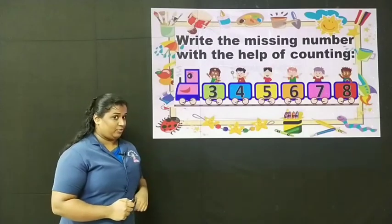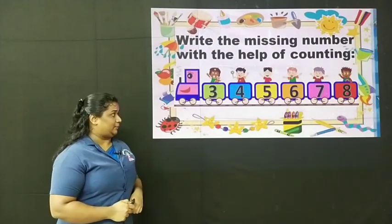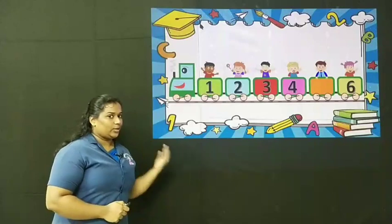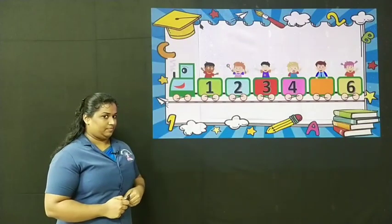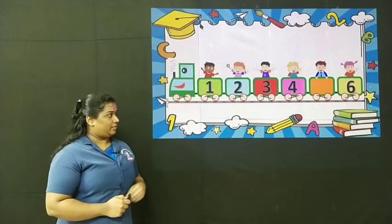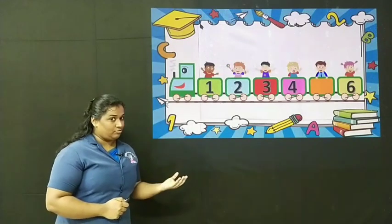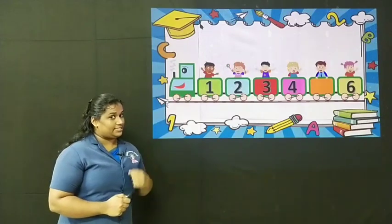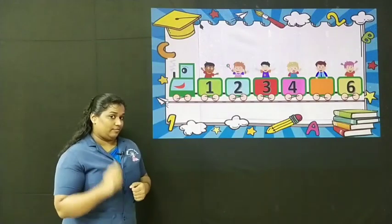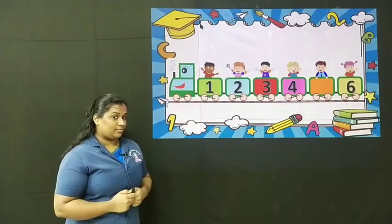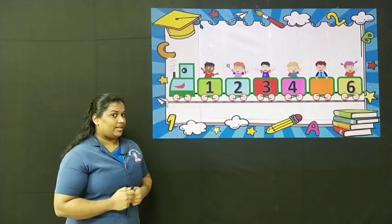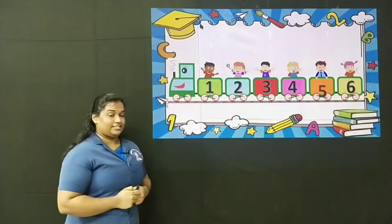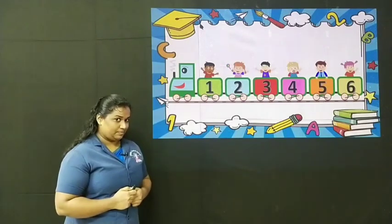Let's see one more number train. Look at the numbers here. We have to count forward. Count forward and tell me which is the missing number. Correct — 5 is the missing number.